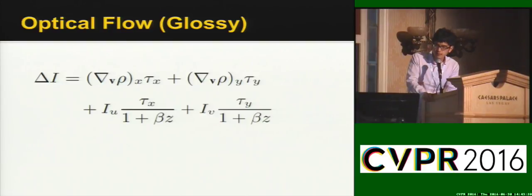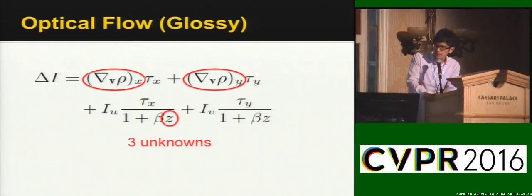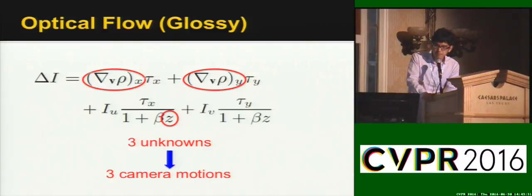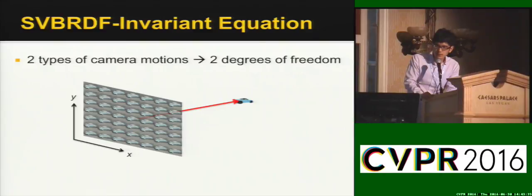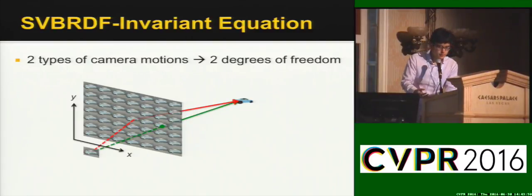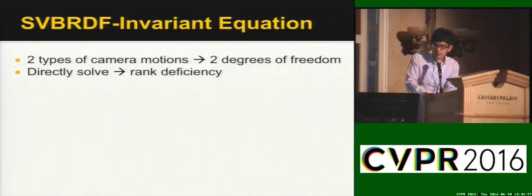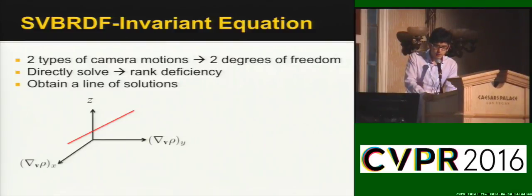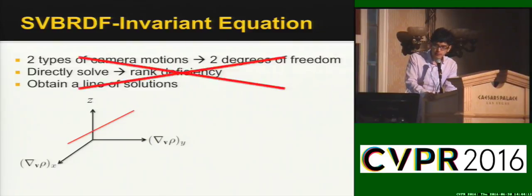Looking at this equation, we know that the unknowns are the two BRDF derivatives and the depth z. So we have three unknowns, so we need at least three camera motions to resolve these ambiguities. Unfortunately, we only have two types of camera motions. So we only have two degrees of freedom in the xy-plane. Note that adding a direction in the z direction does not help because it can be reprojected onto the original xy-plane. So it can be well represented as a motion in the original xy-plane. Since we have three unknowns, if we try to directly solve it, we actually face a rank deficiency issue. Instead of obtaining just one solution, we actually get a line of solutions and we do not know which point on the line is the correct solution. So this method is actually not feasible.